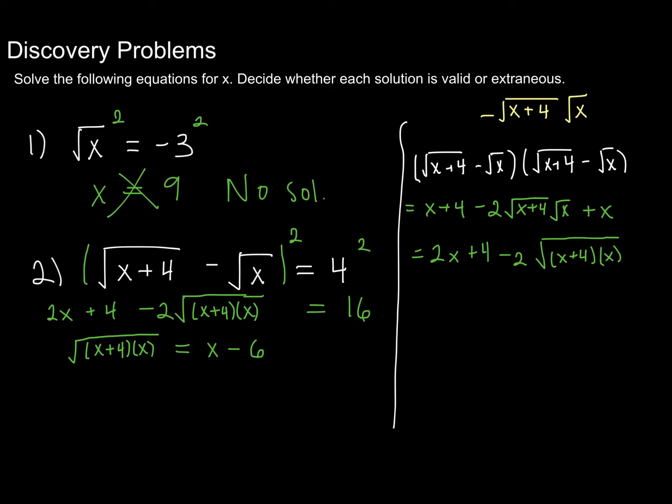Doing so will give me the following. That's, of course, after I've simplified the right side considerably. So make sure that you understand how to get to x minus 6. And now I can square both sides and solve.